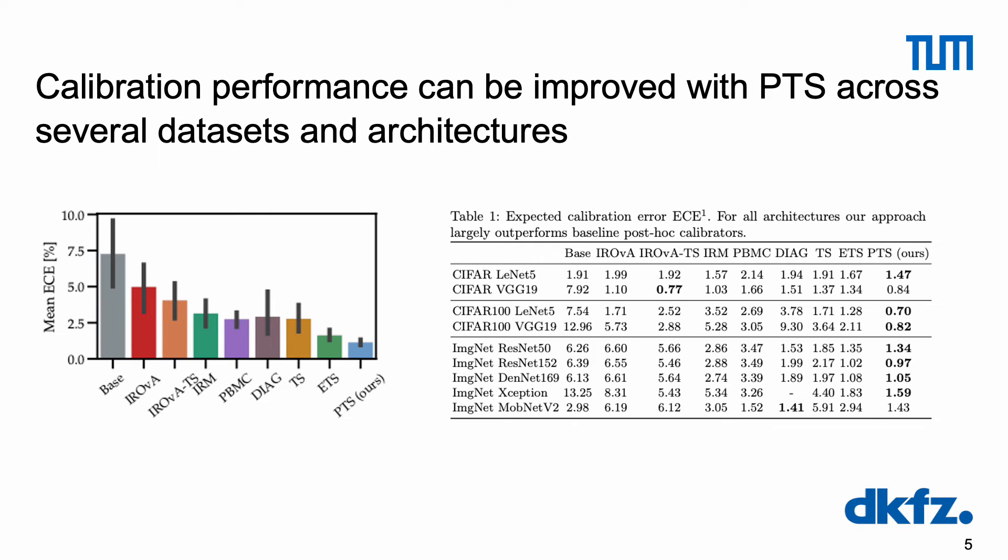Let's have a closer look at our experiments. With data efficiency and the ability to preserve the trained model's accuracy being our key desiderata of post-hoc calibration methods, we mainly focus on accuracy-preserving baselines and temperature scaling based methods. Across three datasets and nine architectures, we see that using our approach substantially outperforms calibration performance compared to other state-of-the-art methods.